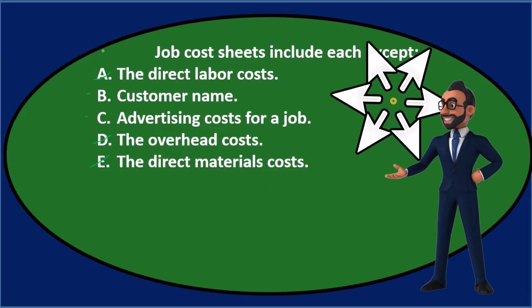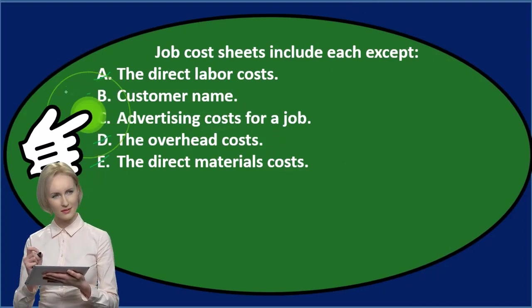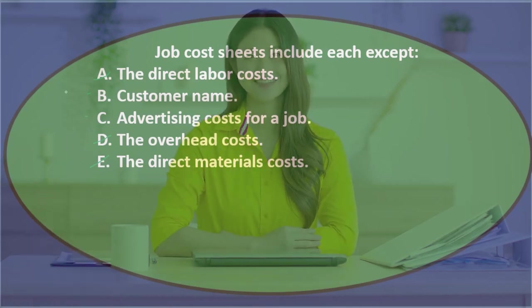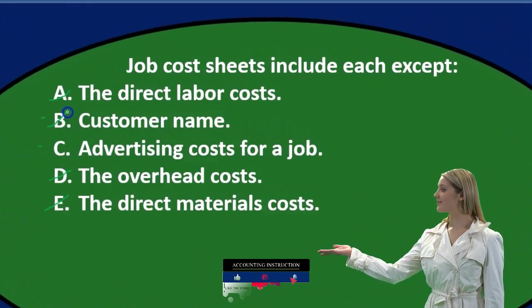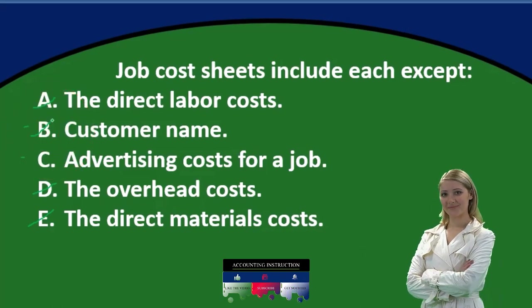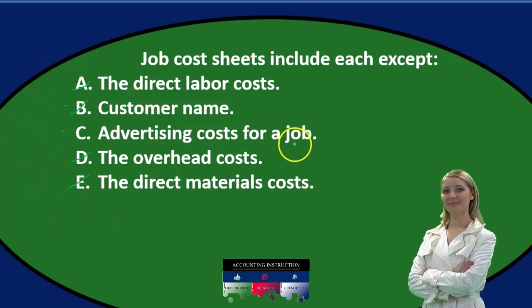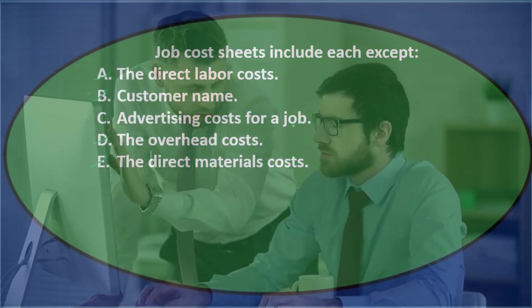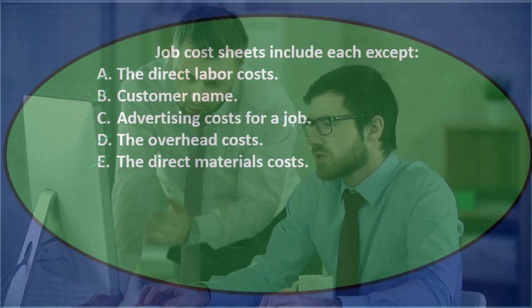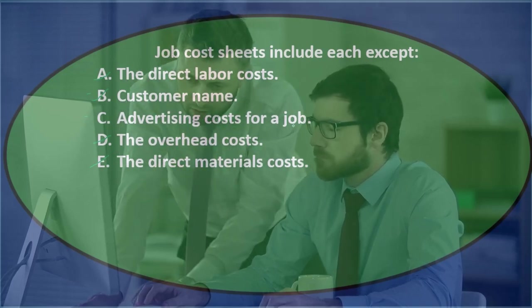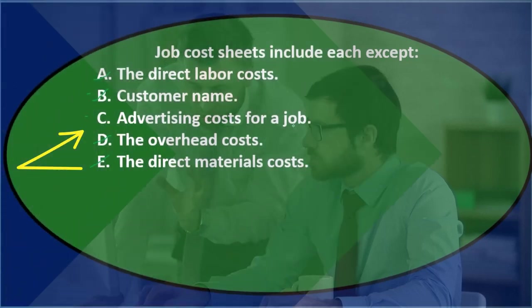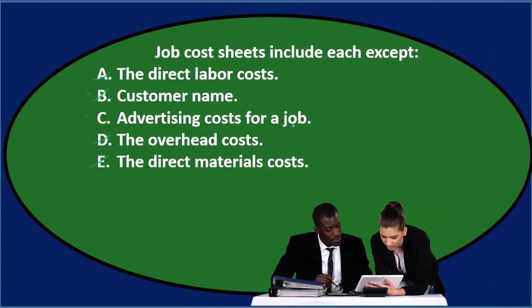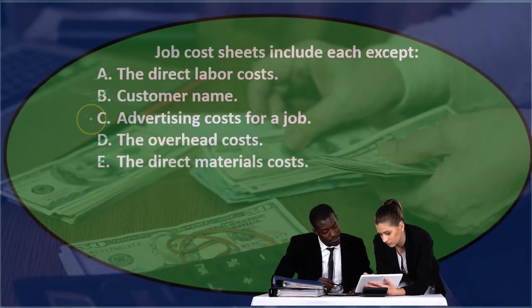Job cost sheets include each except — B: customer name, or C: advertising costs for a job. Of the two, I would think B is included because we need to know who the customer is related to the job — we'll eventually have to track and bill them. C, advertising costs for a job, is tricky because they apply it to a specific job, but advertising is a general and administrative cost — it's not part of production or inventory. It doesn't convert raw materials to finished goods; it helps convert a sale after inventory is produced. So the final answer is C.